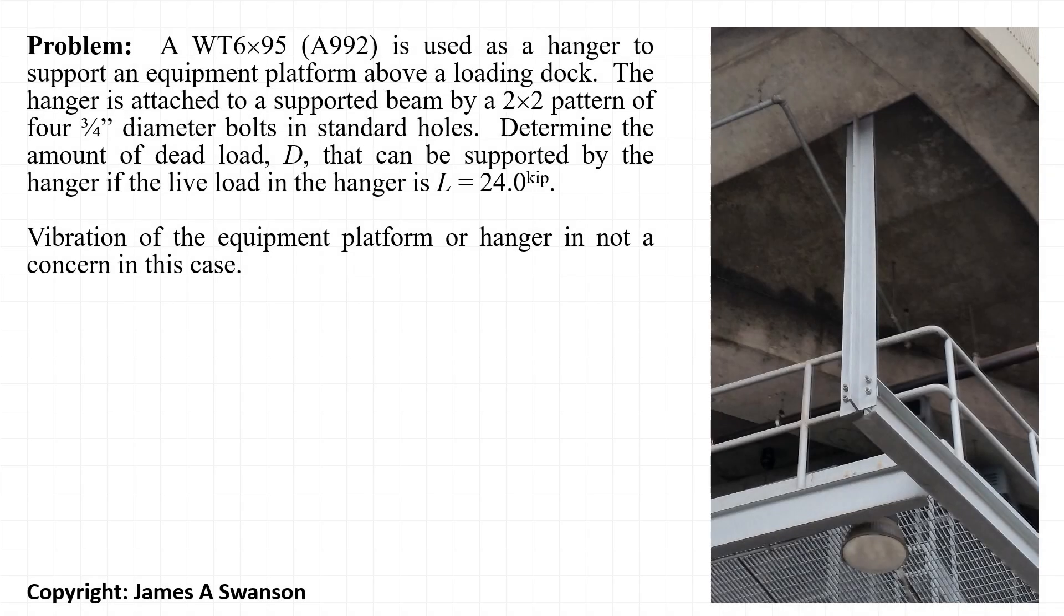In this example we'll be looking at a WT6x95 that's used to support an equipment platform above a loading dock. The hanger is supporting a beam that is attached using a 2x2 pattern of 3/4 inch diameter bolts. It's designed for a live load of 24 kips and our goal is to determine the amount of dead load that the hanger can support.